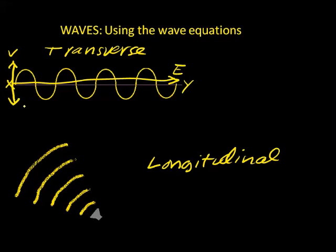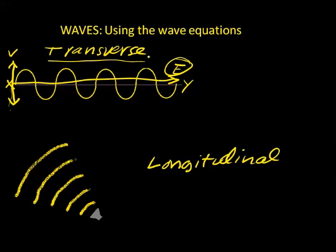If you notice, the direction of vibration transverses or crosses the direction that the energy is traveling. Another way to say that is that the vibration transverses — that means cuts across — the direction of propagation. The direction of propagation is the direction that the wave is carrying the energy. So if the vibration transverses the direction that the energy is traveling, then we have a transverse wave.